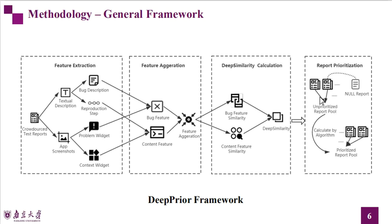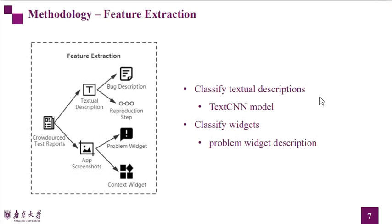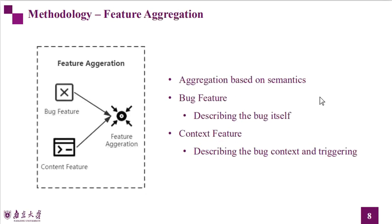The general framework of the DeepPrior method can be seen in the figure. In the feature extraction stage, we collect four different types of report features from app screenshots and textual descriptions: prompt widget, context widget, bug description, and reproduction steps. In order to distinguish between bug description and reproduction steps, we adopt a text classification model. In order to classify widgets, we analyze the textual descriptions to identify the problem widget. After obtaining all features from both app screenshots and textual descriptions, we aggregate them into two feature categories: bug feature and context feature.